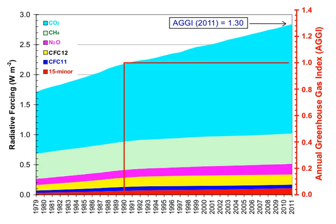Without greenhouse gases, the average temperature of Earth's surface would be about minus 18 degrees Celsius, rather than the present average of 15 degrees Celsius.